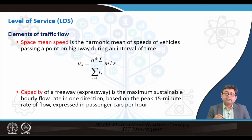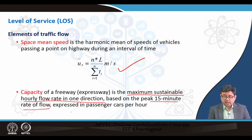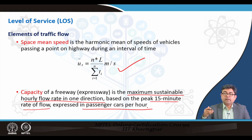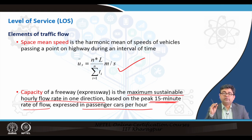In traffic engineering and development of level of service, we use space mean speed rather than time mean speed. Capacity of a freeway or expressway is the maximum sustainable hourly flow rate in one direction based on the peak 15-minute rate of flow, expressed in terms of passenger cars per hour. We always look at the peak 15-minute period because that is the worst traffic condition. We have to always design our facilities keeping in mind the worst condition — if you fulfill the worst condition, any better condition will also be fulfilled.